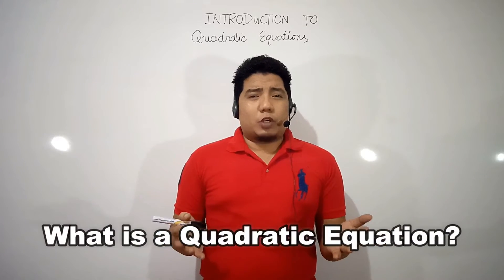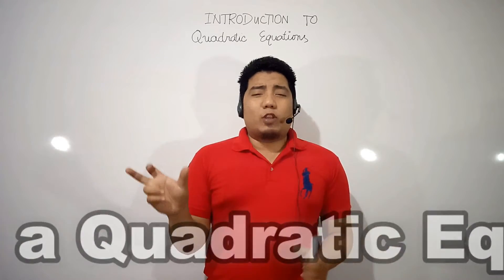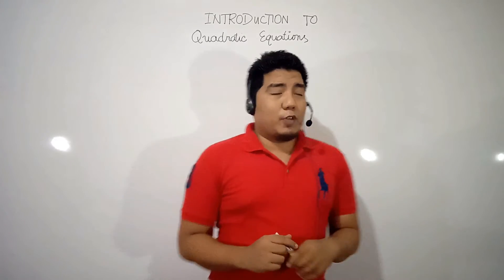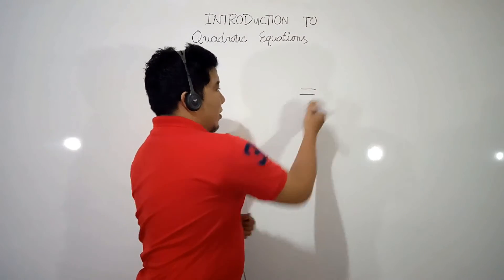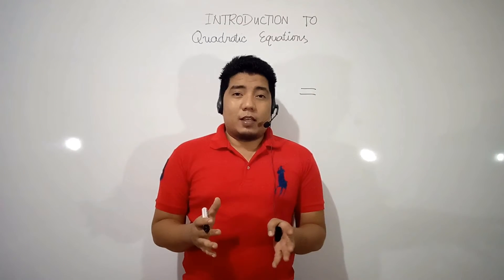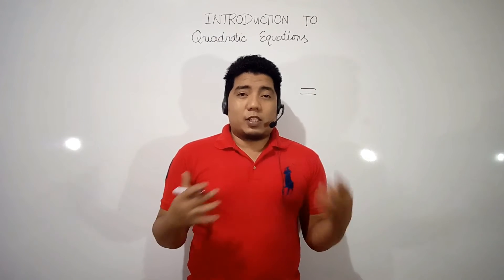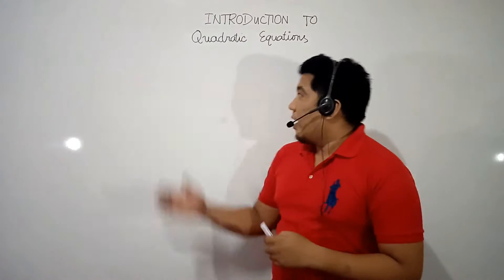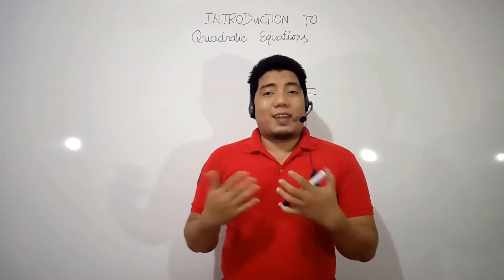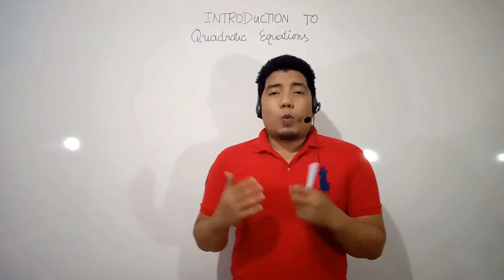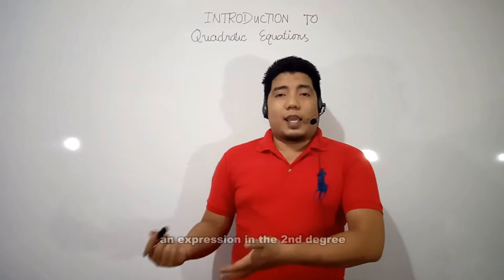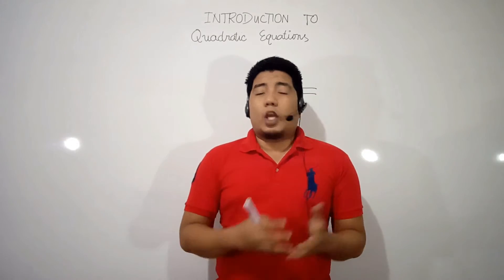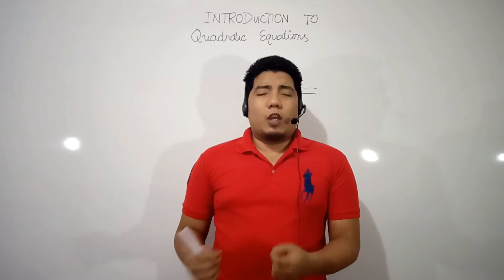What is a quadratic equation? If we consider the two words: an equation is the process of using the equal sign, so everything that uses an equal sign is considered to be an equation. Now, quadratic means it is in the second degree. Therefore, a quadratic equation is all about equations in the second degree.